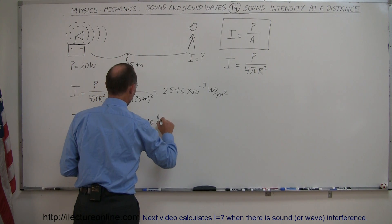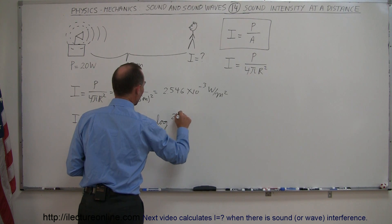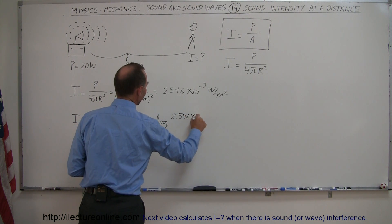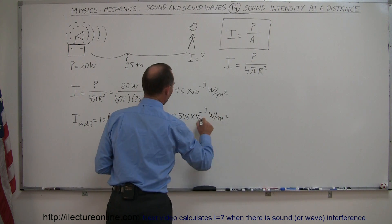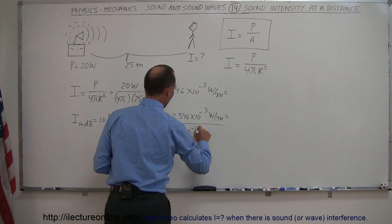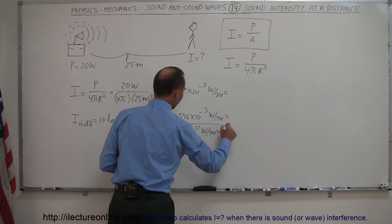So this is equal to 10 times the log of 2.546 × 10⁻³ watts per square meter divided by 1 × 10⁻¹² watts per square meter. That's our reference.